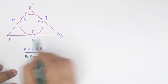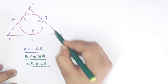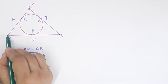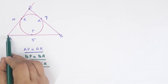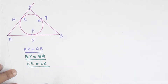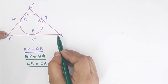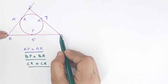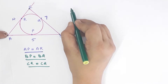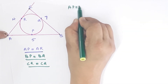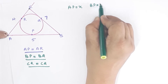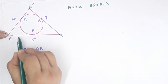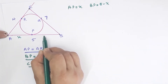The tangents are equal from external points A, B, and C. Let AP = AR = x. Then BP = BQ = 5 minus x, which we call y. Similarly CR = CQ = 7 minus y.